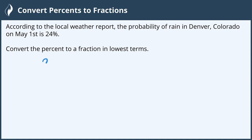Here we have the percent 24%. Percent directly translates — it means divide by 100. A little mnemonic: here's our hundred, kind of in disguise — percent, dividing by 100. So we can rewrite this 24% as 24 over 100.